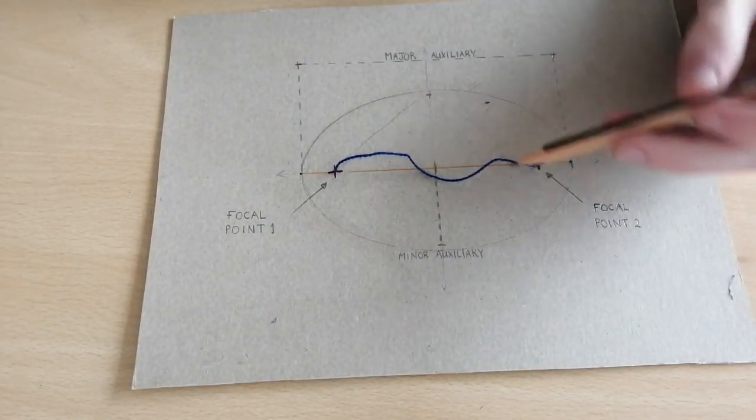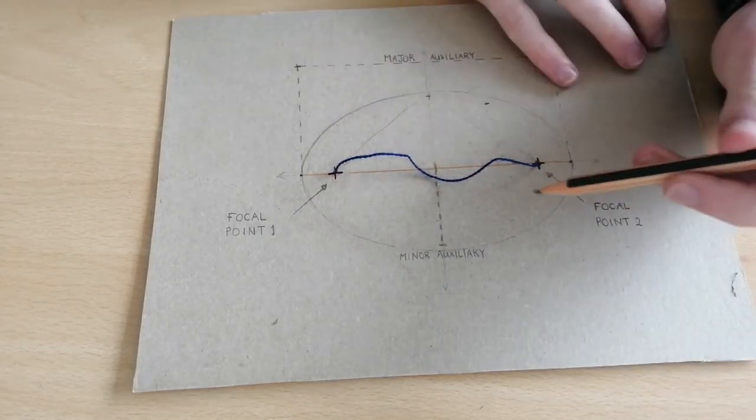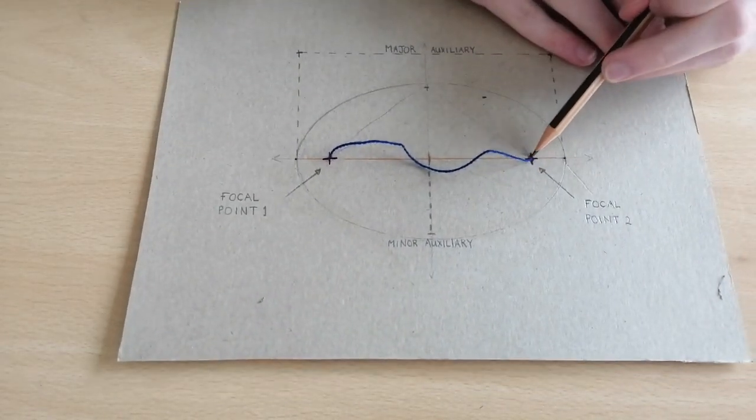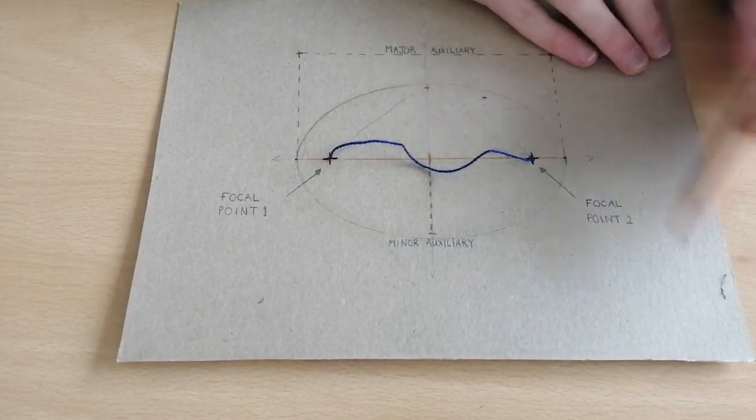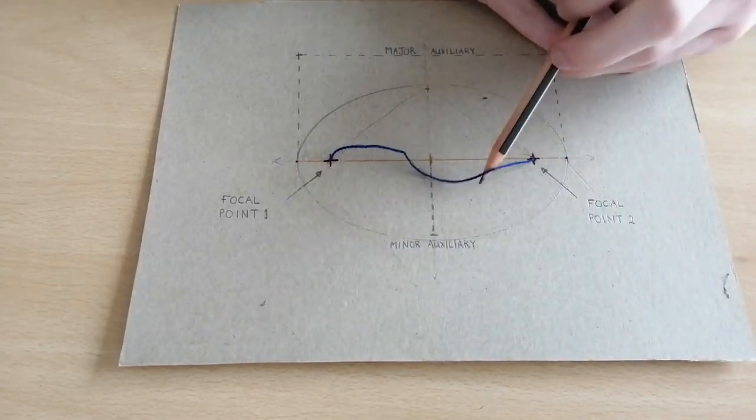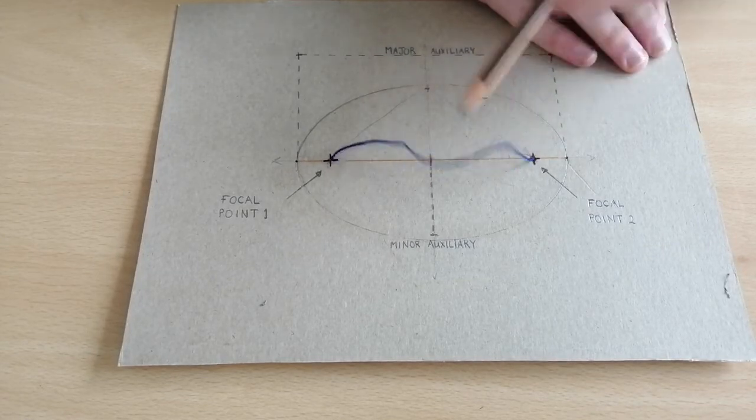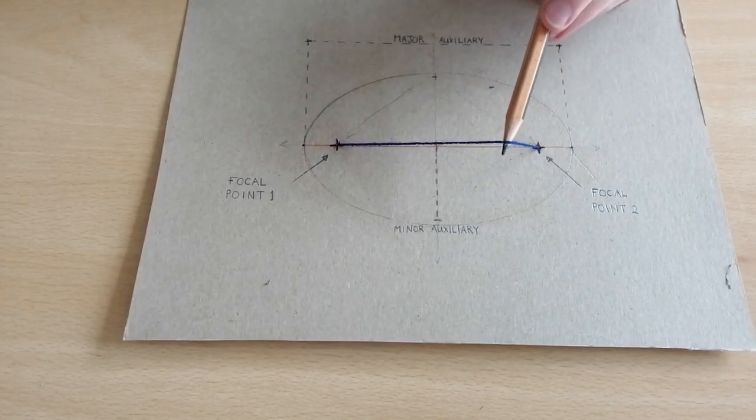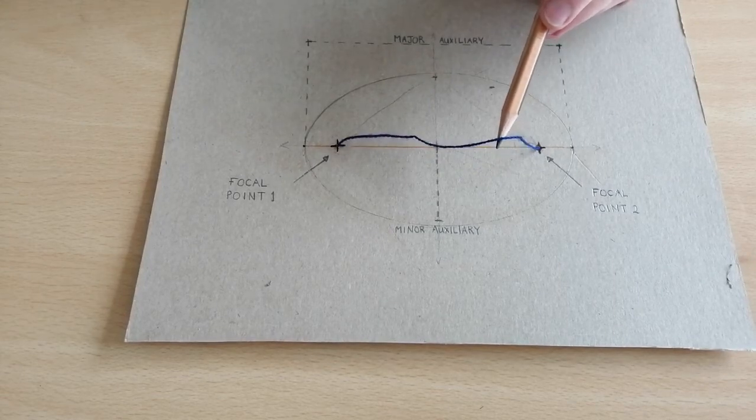Now, some key considerations when drawing using the pin and string method. Ensure that the focal points are marked correctly. Ensure that the string that we use is equal to the length of our major auxiliary, and ensure that this is not an elastic material. As if it's elastic, it's going to start distorting the image of our ellipse.